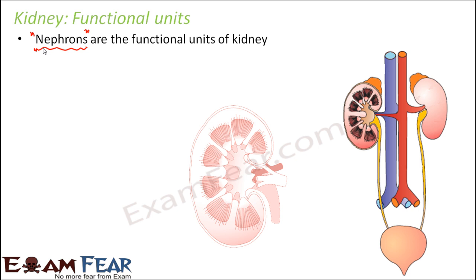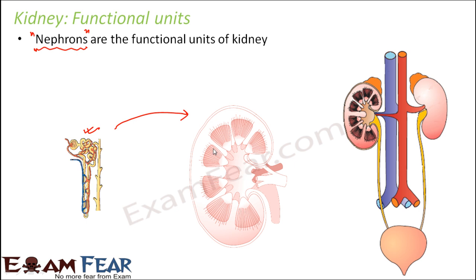Now let us see where these nephrons are located, because this is how a kidney looks like — the internal structure. Each nephron has a coiled tubular structure, and there are millions of such nephrons inside the kidney. They are located in the cortex and the medulla region of the kidney. Some part of the nephron is located in the cortex, and the U-shaped structure and the collecting tubule are located in the medulla.